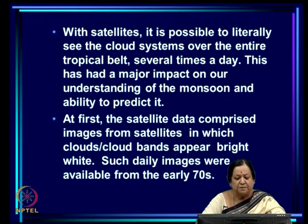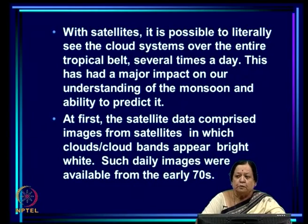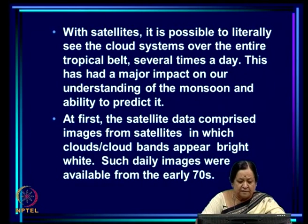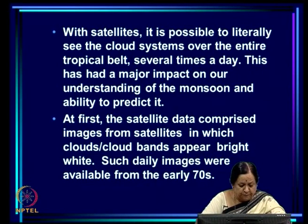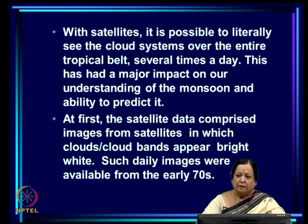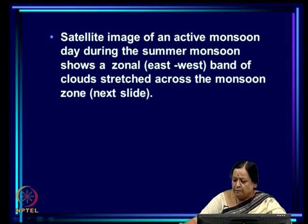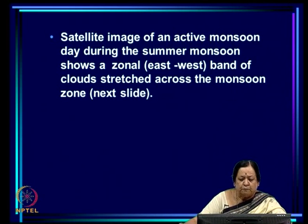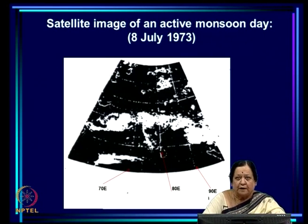This has had a major impact on our understanding of the monsoon and on our ability to predict various facets of the monsoon and its variability. At first when meteorological satellites came in, the data we had were images — photographs taken by cameras from satellites — in which clouds appear as white blobs because a lot of sunlight gets reflected from the tops of the clouds. A typical image from that time is of an active monsoon day, 8th of July 1973, on which a lot of rainfall occurred in the monsoon zone.